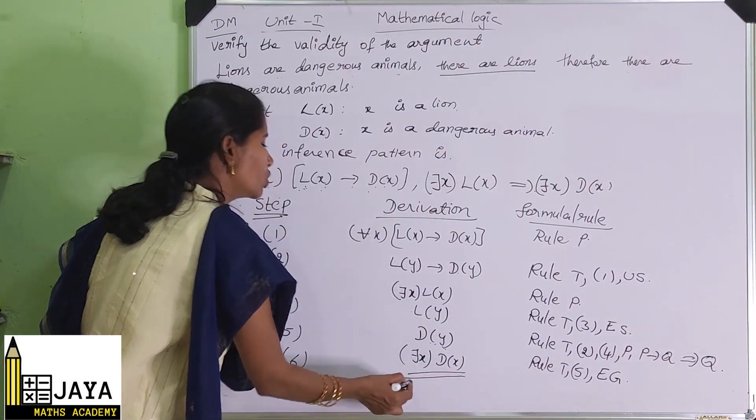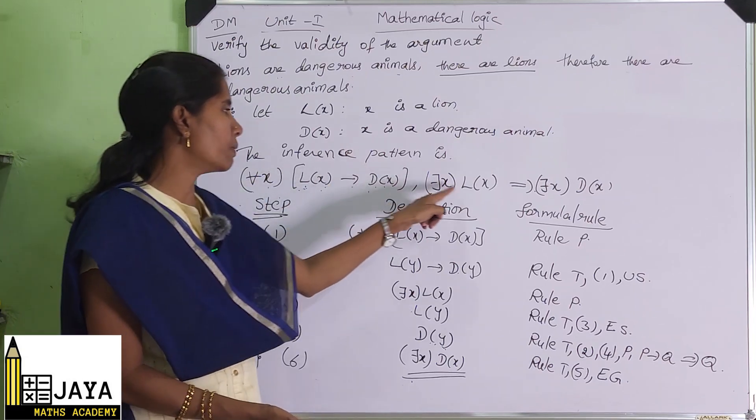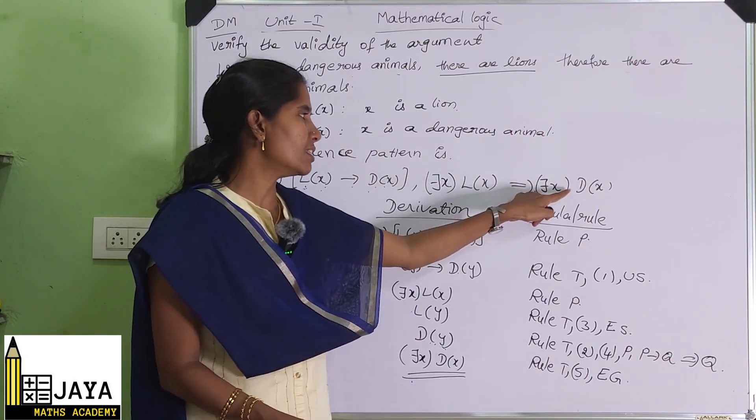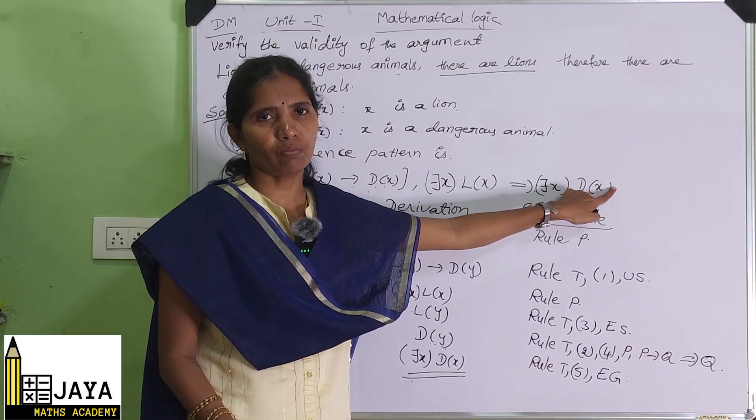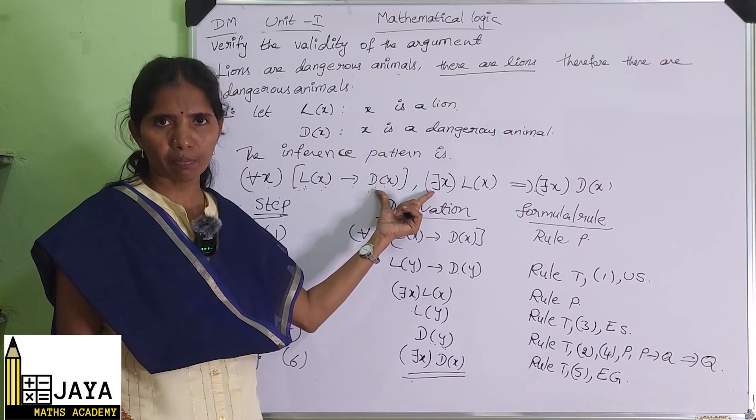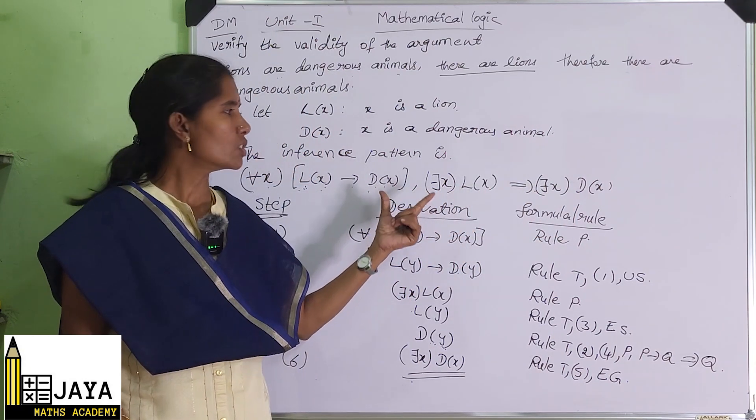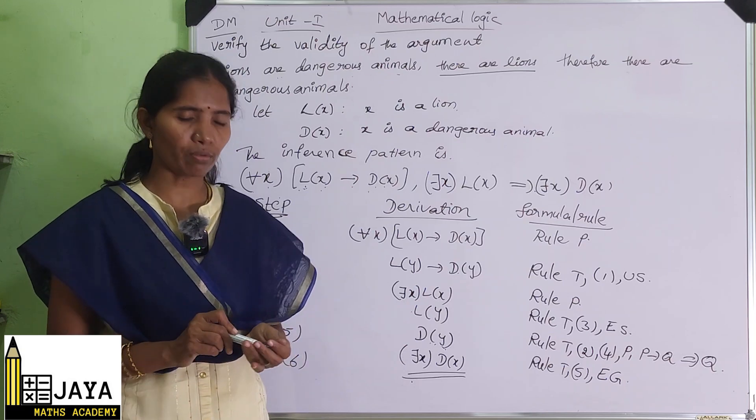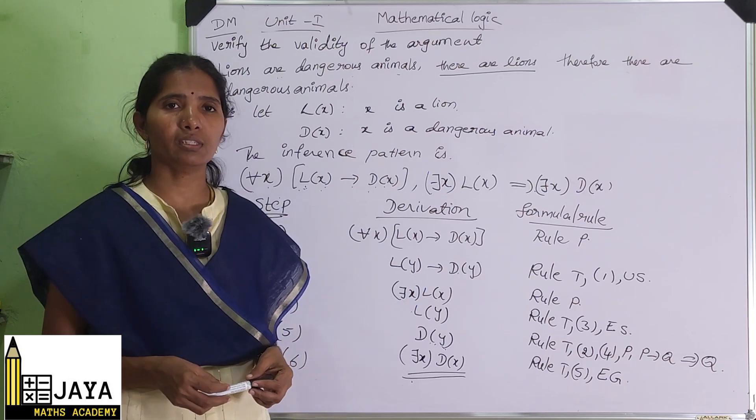So this is a valid conclusion. From these two premises, there exists x, D(x) we will get. This follows from these two premises. This is the solution to this problem. If you have any doubt, you can comment on this.